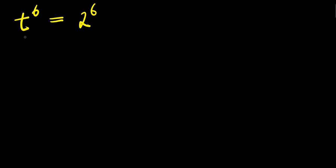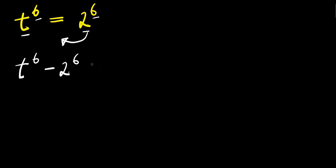Hello, how to solve this exponential problem. This is t to the power 6 equals 2 to the power 6. We are solving for all values of t that satisfy this equation, so let's move this over here. We have t power 6, and this becomes minus 2 power 6 equals zero.